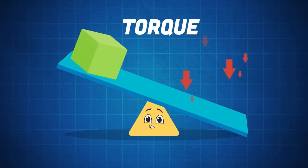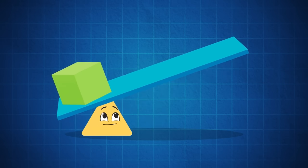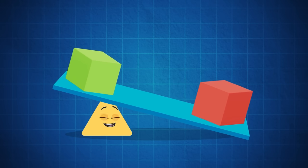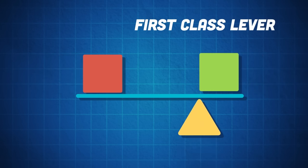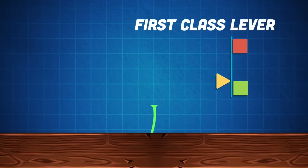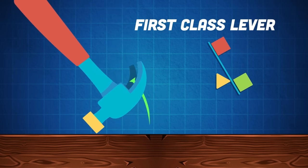The mechanical advantage has to do with how much force a simple machine multiplies. The further the effort is away from the fulcrum, the easier the load will move. The first class lever: the closer the fulcrum is to the load, the less effort is needed to move the load a shorter distance.